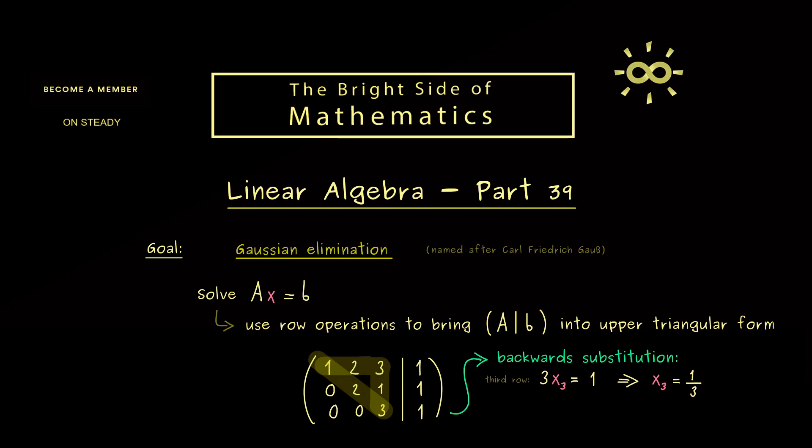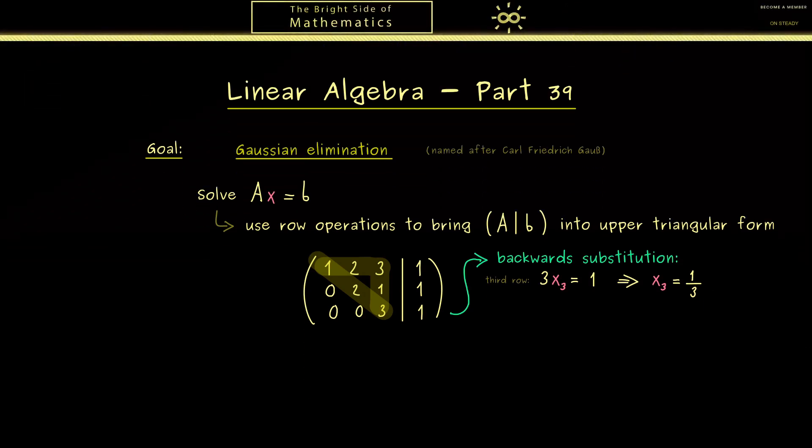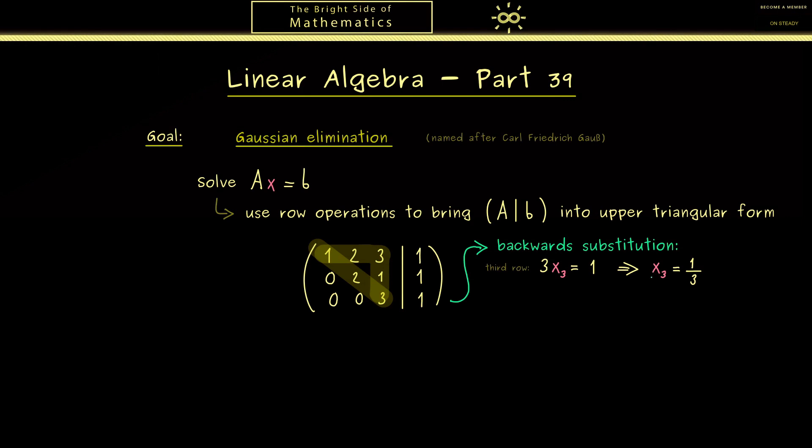This means the solution of the system necessarily needs that x3 is equal to 1 third. Hence, in this case only two variables remain to solve. However, we see that this is not harder than before because we can use our fact here that x3 is equal to 1 third.